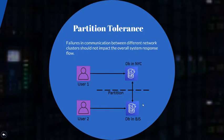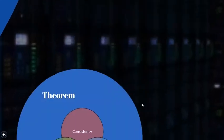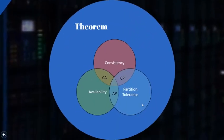Let's see the theorem. According to the theorem, we can only select two out of three properties, and out of these properties network partitions should always be tolerated. This leaves us with the choice between availability and consistency.